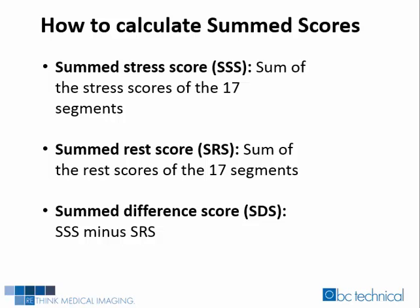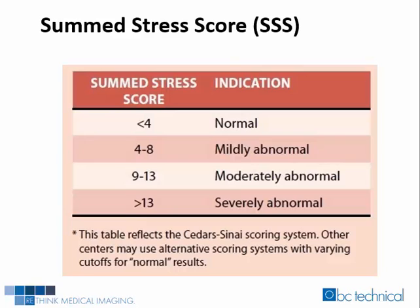The summed stress score, summed rest score, and summed difference score incorporate the extent and severity of perfusion defects during the non-gated stress and rest imaging datasets. The summed stress score is a semi-quantitative index obtained by adding the individual scores from the 17 segments that are analyzed and scored during a stress study. Each segment is scored on a five-point scale. A normal range indicates an area of normal perfusion, while higher summed stress scores reflect greater extent and severity of perfusion defects during the stress study.